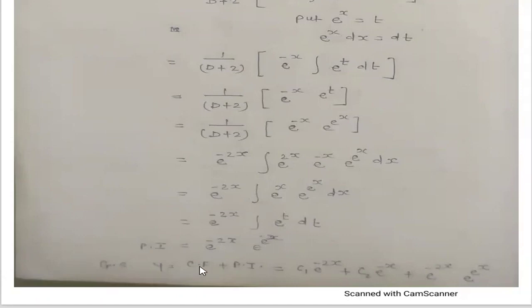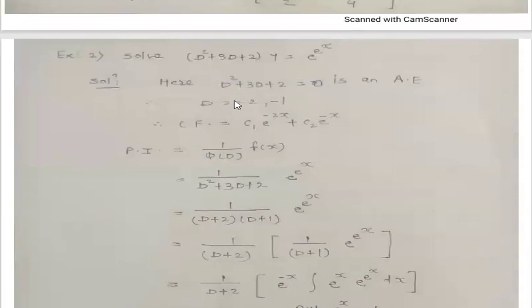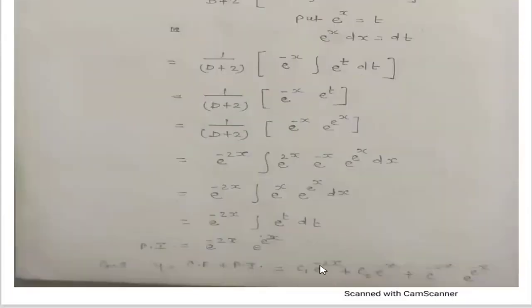The general solution is y = CF + PI. So y = c₁e^(−2x) + c₂e^(−x) + e^(−2x) · e^(e^x). This is the general solution for the given LDE, and this concludes the first general method. Thank you.